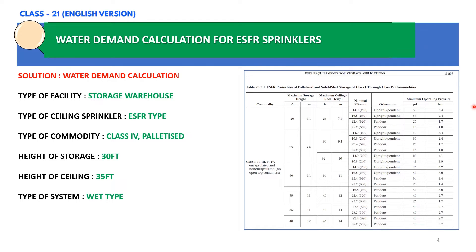If you want to select ESFR sprinklers for other types of commodity, you need to select the appropriate table. You can refer to Chapter 23 of NFPA 13, 2019 edition. This table covers ESFR sprinklers for Class 1 through Class 4 commodities for palletized and solid piled storage areas.